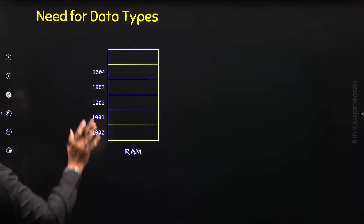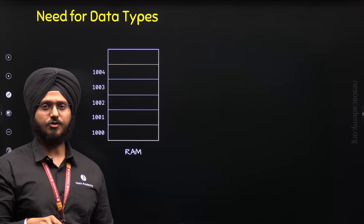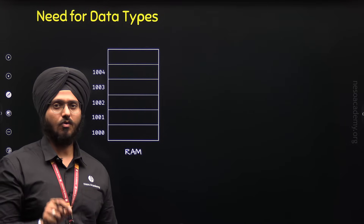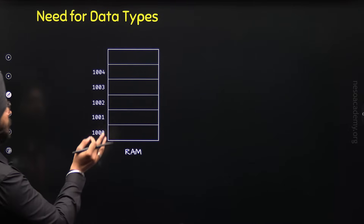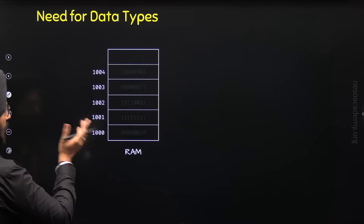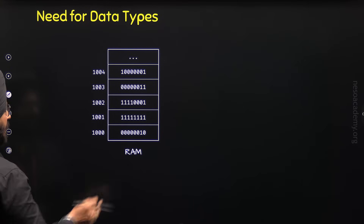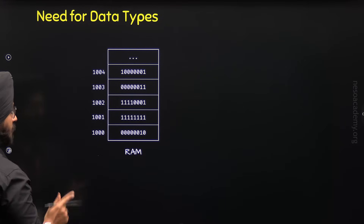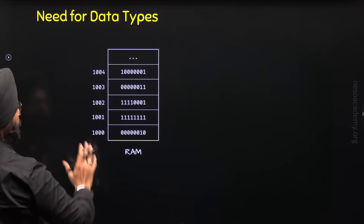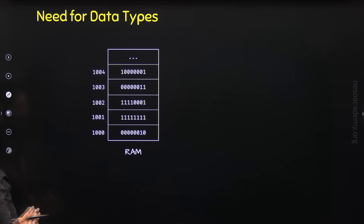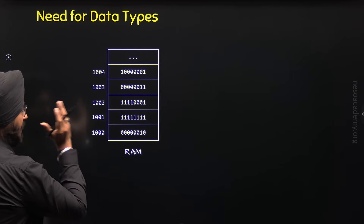Let us assume that some data is already stored in random access memory in binary form. Whatever data we try to store in RAM will always be stored in binary form — it does not matter what type of data we store. The data will always be stored as 0s and 1s. Each block is holding 8-bit data, that is 1-byte data. Each block has an associated address, and this is the simplified representation of random access memory.